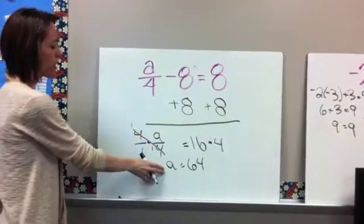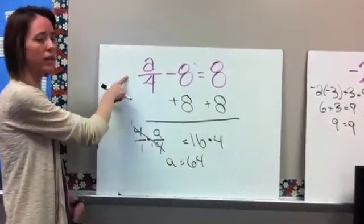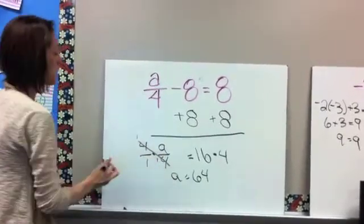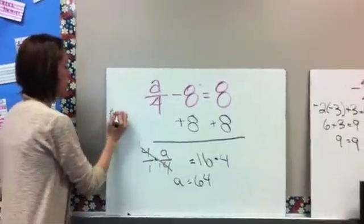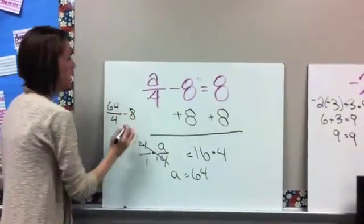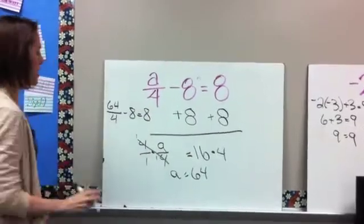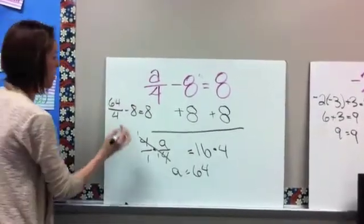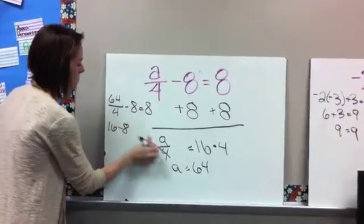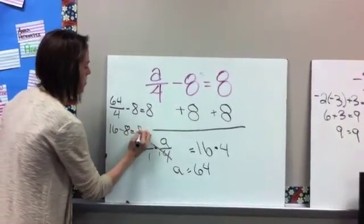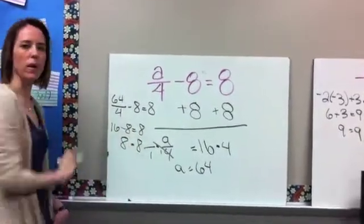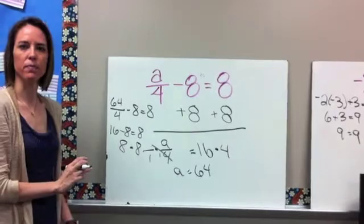Okay, then again, very important. Once you get an answer, you always need to plug it back in and check it. Because if you got it wrong, obviously it's not going to work out. So let's plug in 64. So we have 64 divided by 4 minus 8 equals 8. So 64 divided by 4 is 16 minus 8 equals 8. And we know that 16 minus 8 is 8. So that works. It means we got the right answer.